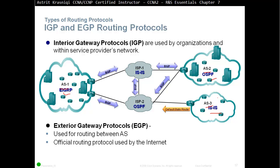A large company that has only one connection — single-homed — towards one ISP doesn't really need to run BGP. They can just have a default static route saying anything goes towards my ISP, and the ISP creates a static route towards the company. However, a large company that is multi-homed to two different ISPs has a reason to run a BGP routing protocol.